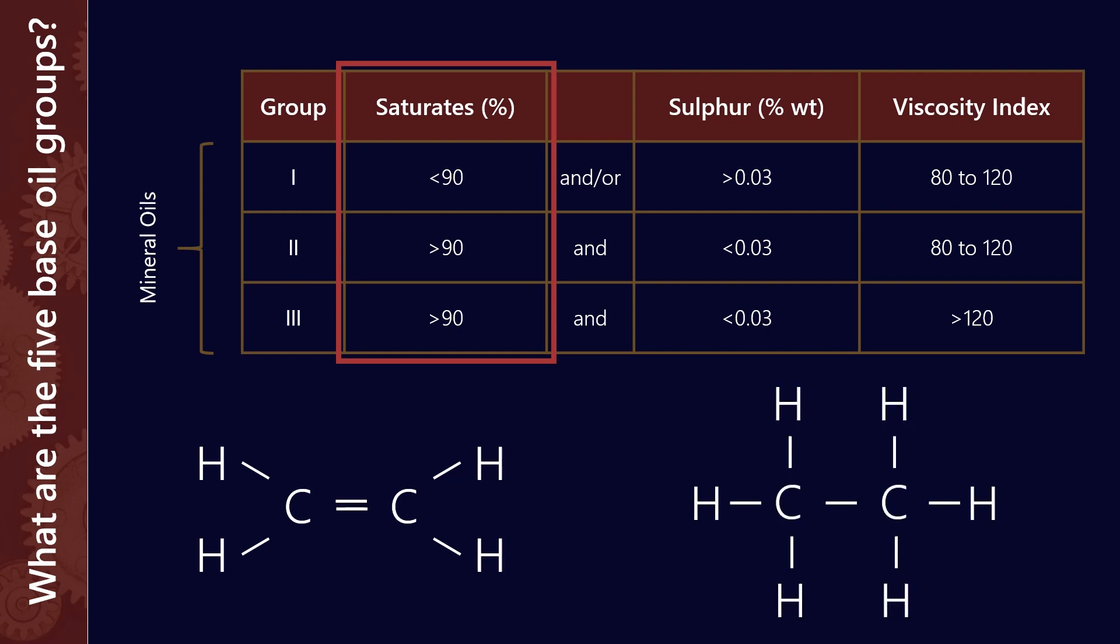This is, with only two carbons, the simplest version of saturating a hydrocarbon that I can give. But you can obviously do that for any length of a hydrocarbon chain. So the saturate content varies between group 1 and group 3.